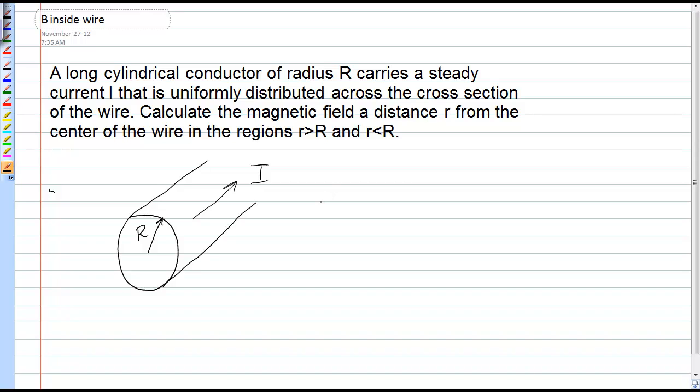Because of the high symmetry of this situation, we'll be able to apply Ampere's Law to find the magnetic field. The working form of Ampere's Law that we have is mu naught I in, where I in is the current that threads through our Ampereian circle, over 2 pi r, where little r is the radius of the Ampereian circle.